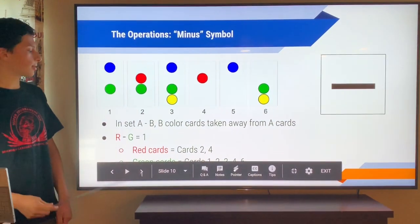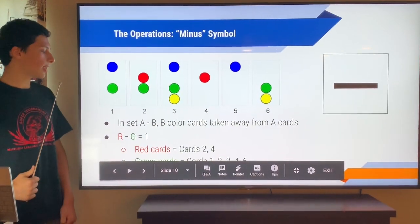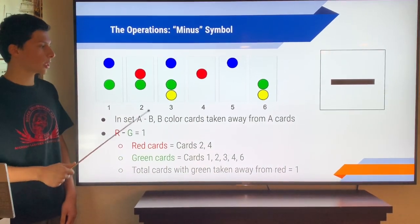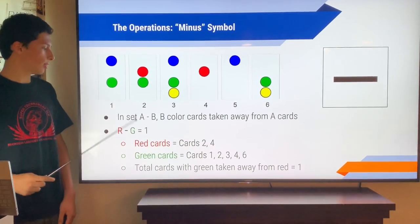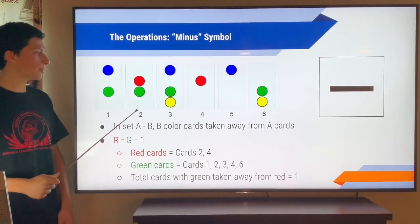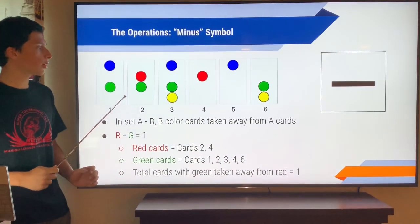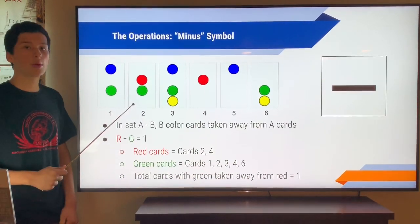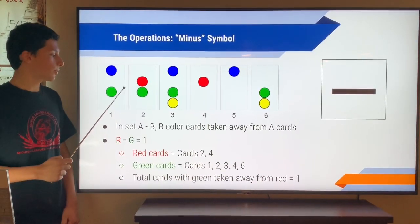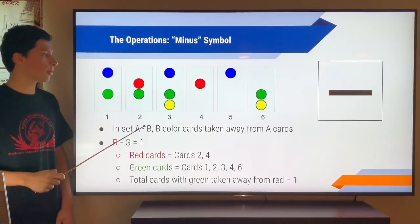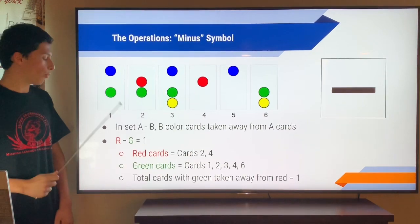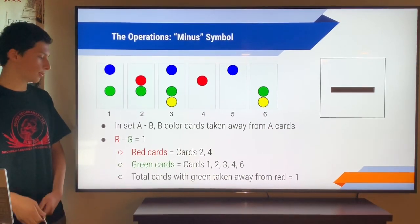Next up is the minus symbol. So let's say we had set A and we subtracted B from it. The B colored cards are taken away from the A colored cards. So let's say we had red minus green. To begin, we're going to look at all the cards that have red, which are cards 2 and 4. Now we're going to take away the green cards from them. So we see that card 2 has green in it, so we're going to take that away from the set, so we're left with card 4. So we're left numerically with one card left. So that's the answer.